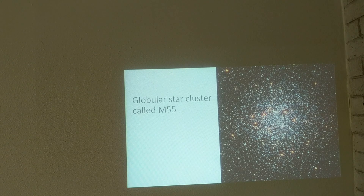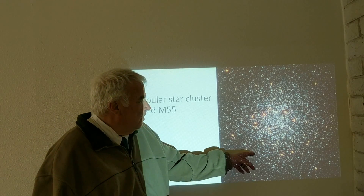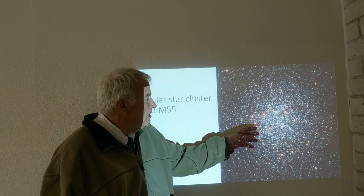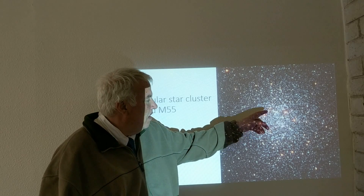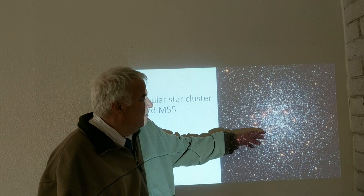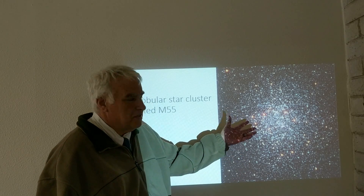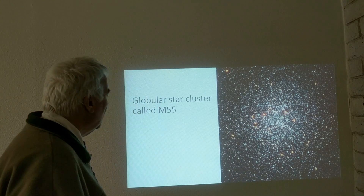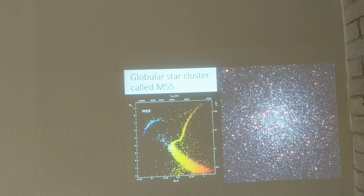Here's a globular cluster called M55. There are maybe 170 or so of these in our galaxy, the Milky Way. You can see many, many stars — hundreds of thousands of stars. Some of the bright ones we can see are red giant stars. Very many of these stars are very old, in a group that formed a long, long time ago.